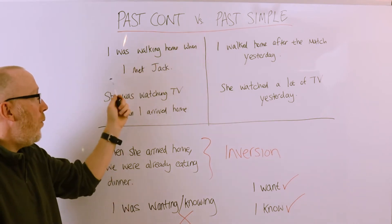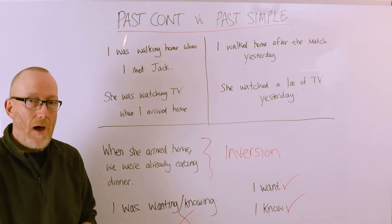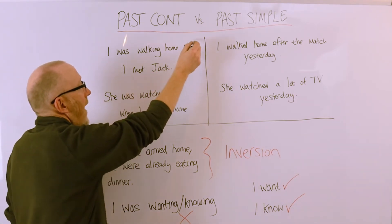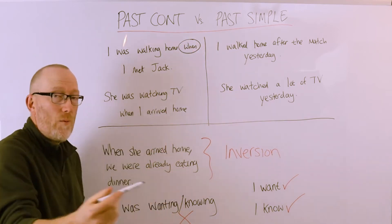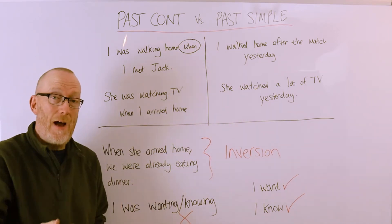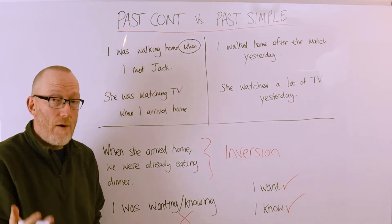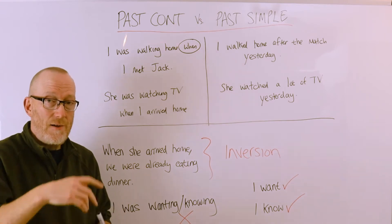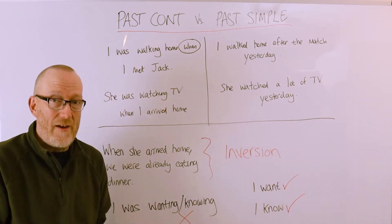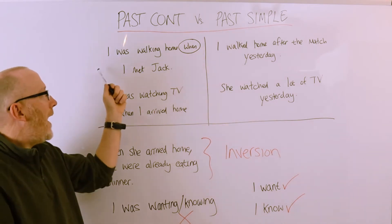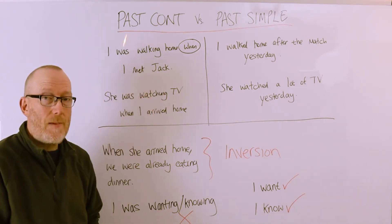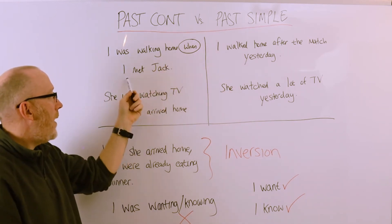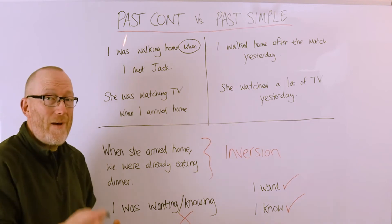For example: 'I was walking home when I met Jack.' The word 'when' is something you will use, hear, and see very frequently with the past continuous, because 'when' allows us to sequence the timing of events. Past continuous 'I was walking home,' followed by simple past 'I met Jack.'